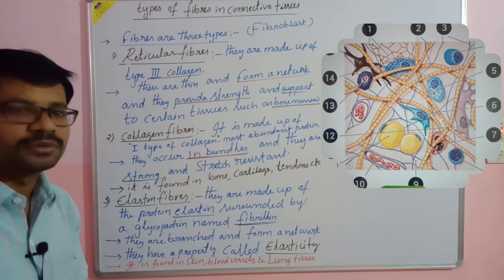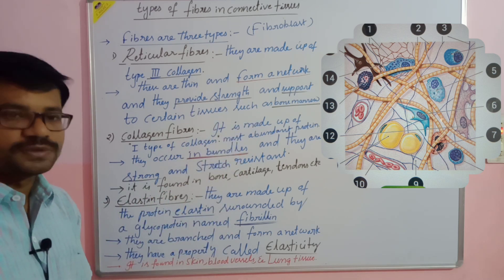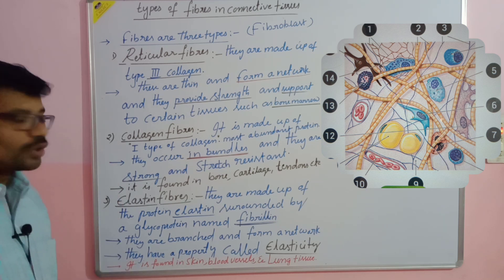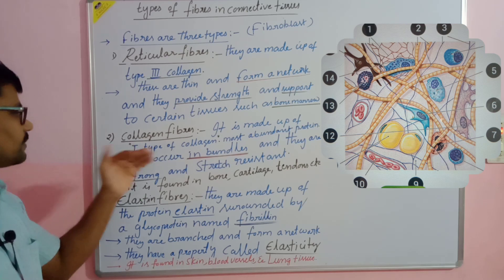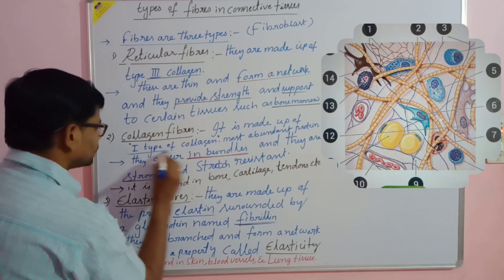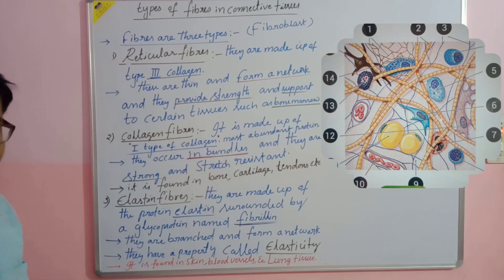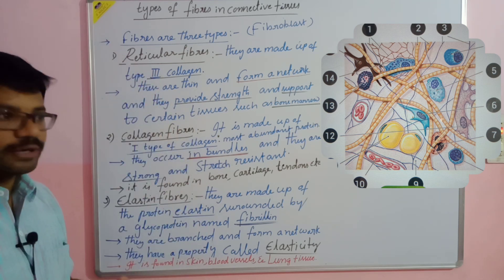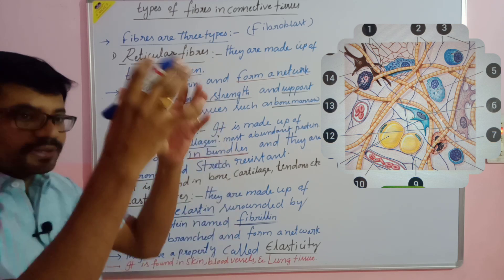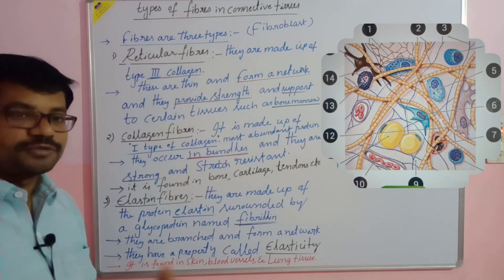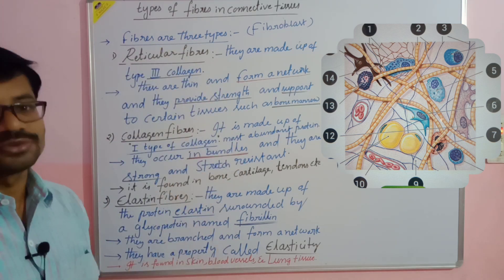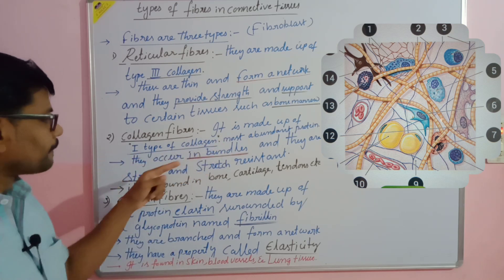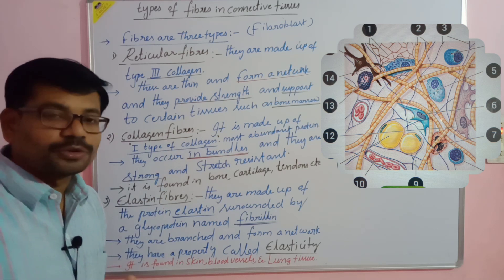Reticular fibers provide strength to tissues like bone marrow and lymphoid organs such as lymph nodes and spleen. The second type of fibers are collagen fibers. Collagen fibers are made up of type one collagen protein — they are very strong and rigid, and are arranged as bundles, which gives strength to the tissues.